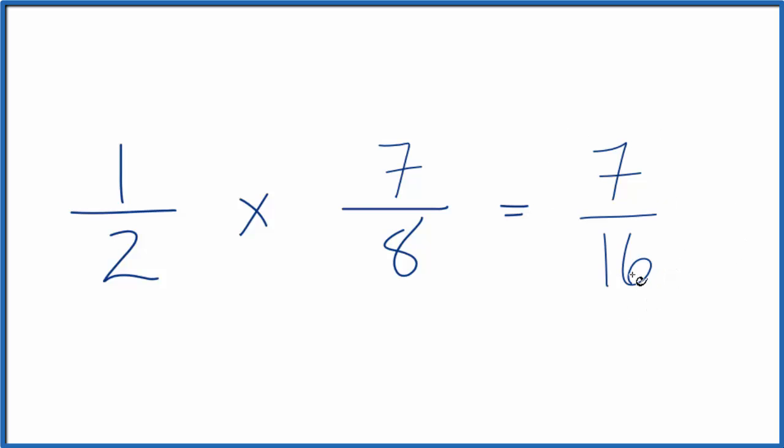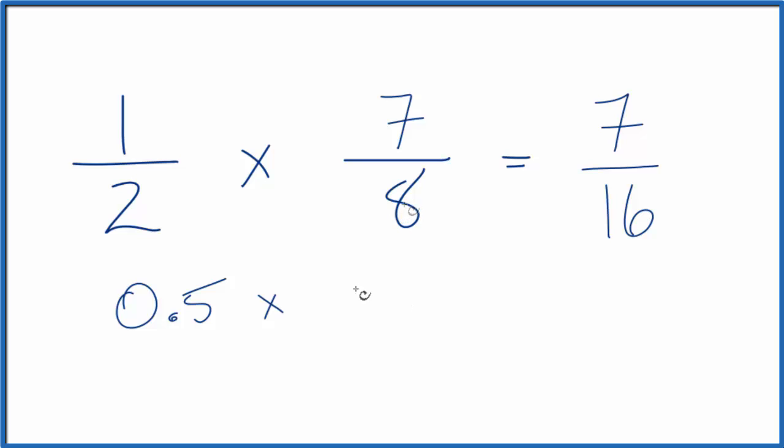You can also check this with decimals. 1 divided by 2, that's 0.5, times 7 divided by 8, that's 0.875.